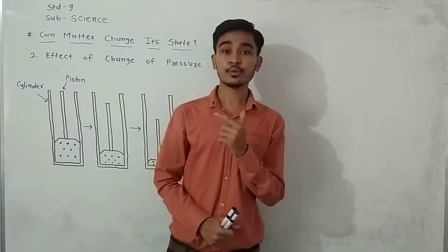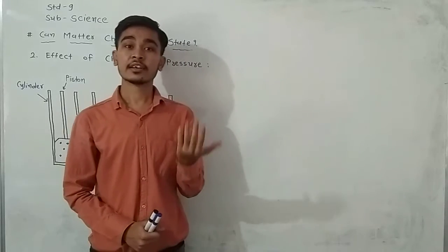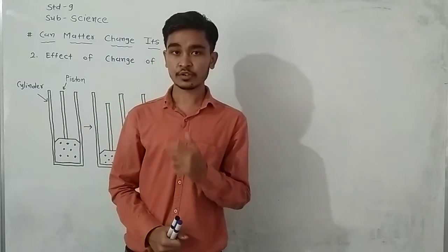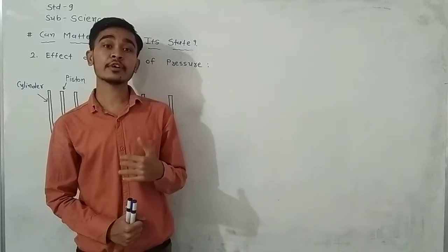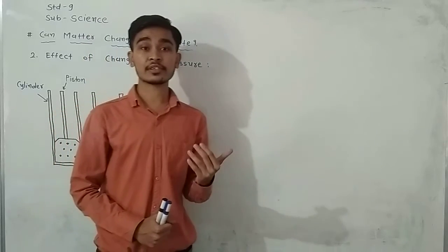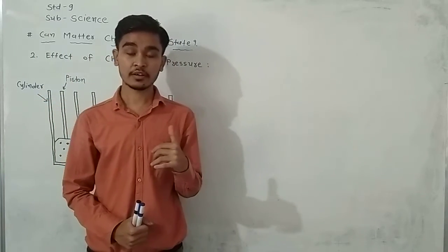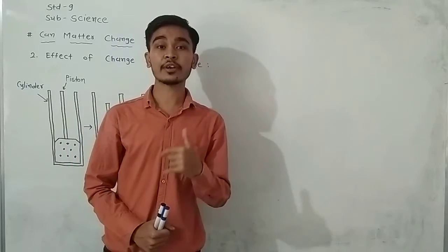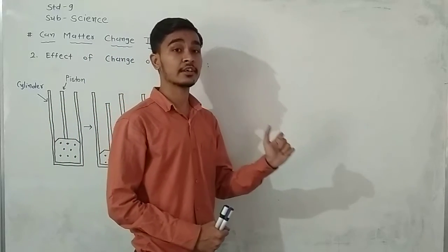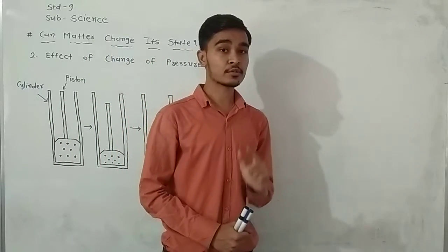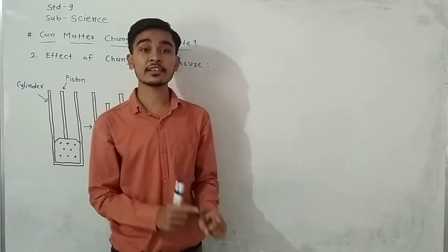You have known that solid carbon dioxide exists in solid form. This solid carbon dioxide is obtained by applying high pressure. Now, when pressure is decreased, this solid carbon dioxide gets converted directly into the gaseous state, without passing through the liquid state.